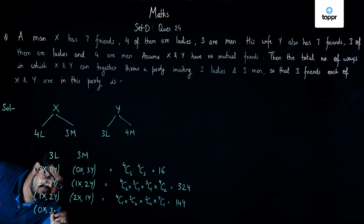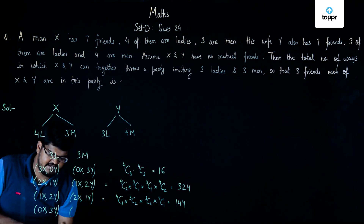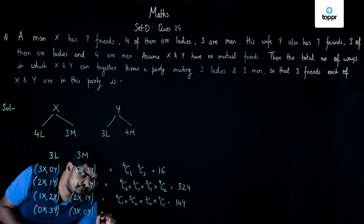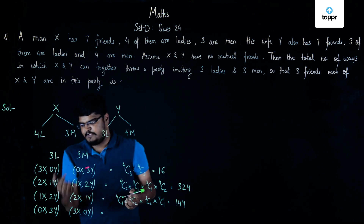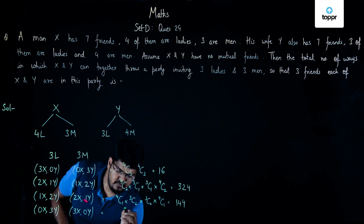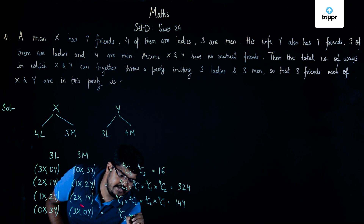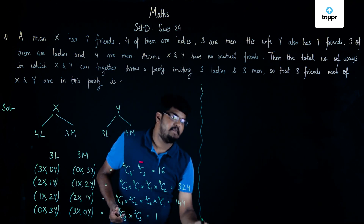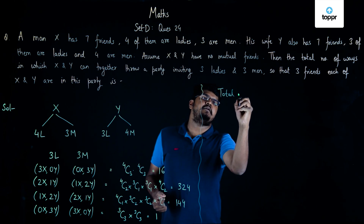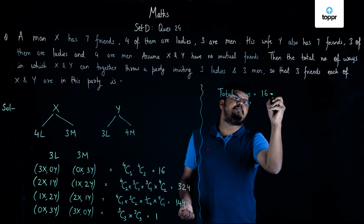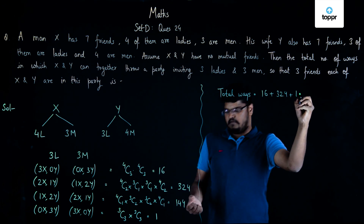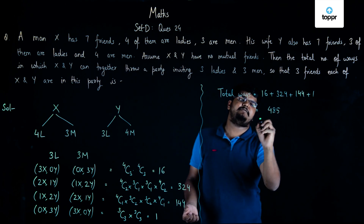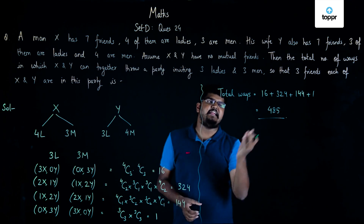Finally, we take zero lady friends of X and three lady friends of Y, and three male friends of X and zero male friends of Y. This is done in 4C0 × 3C3 × 3C3 × 4C0 = 3C3 × 3C3 = 1 way. So the total number of ways is 16 + 324 + 144 + 1 = 485. We can arrange this party in 485 ways.